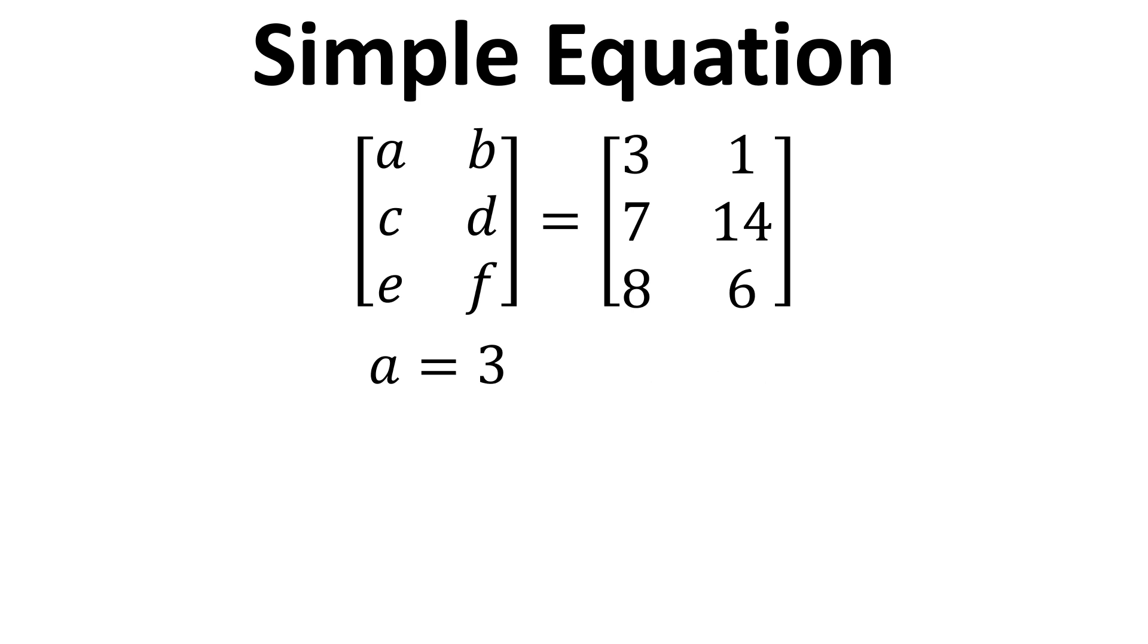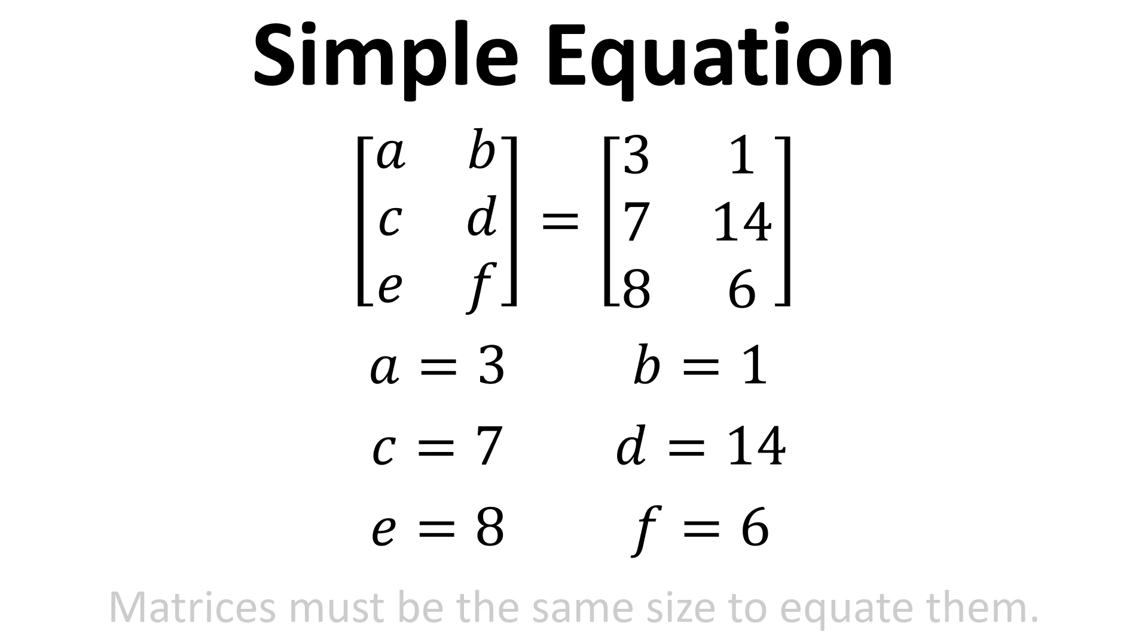That just means that A equals 3, B equals 1, and so on. It's just a simple equation, so the entries in the first matrix equate to the entries in the second matrix. In order to do this, the two matrices must be the same size.